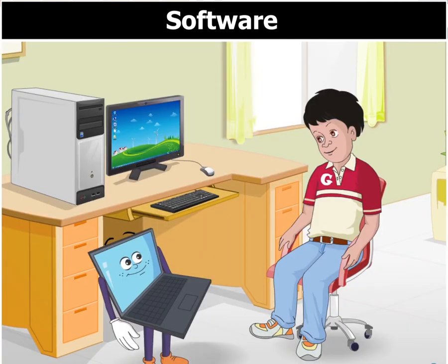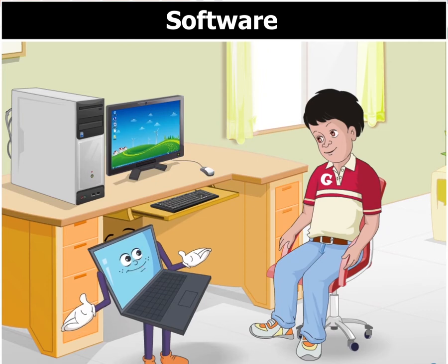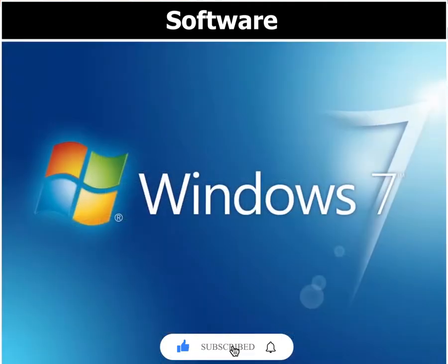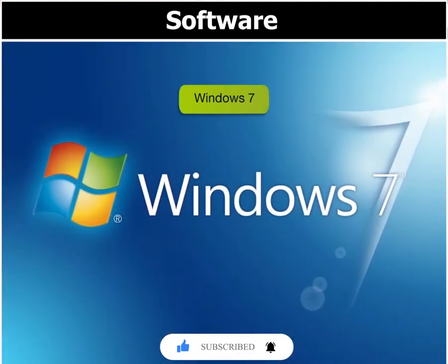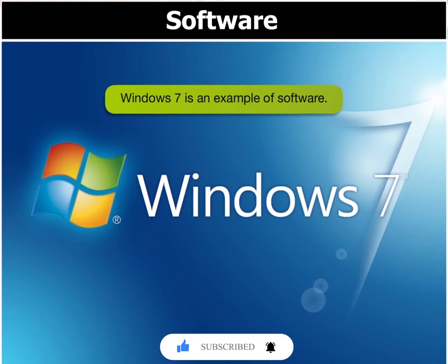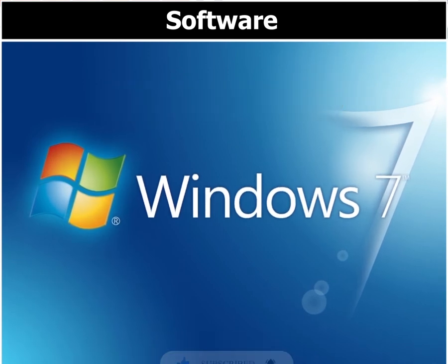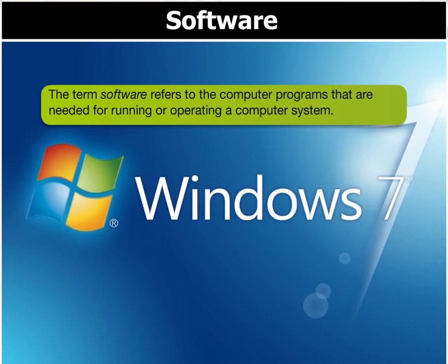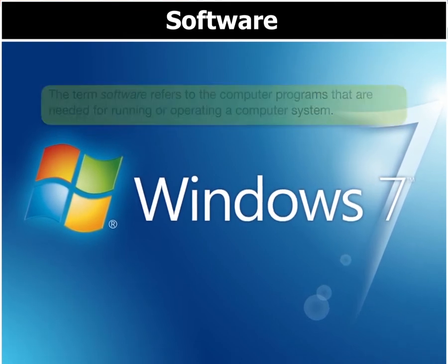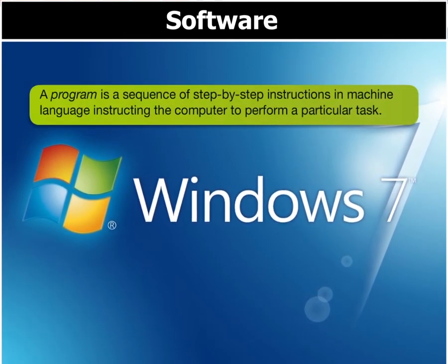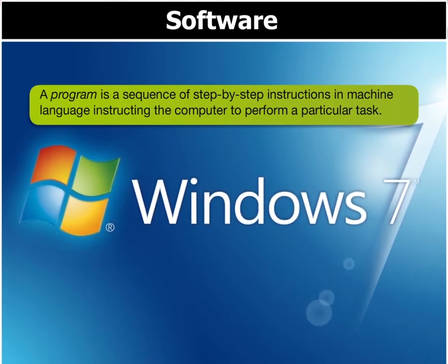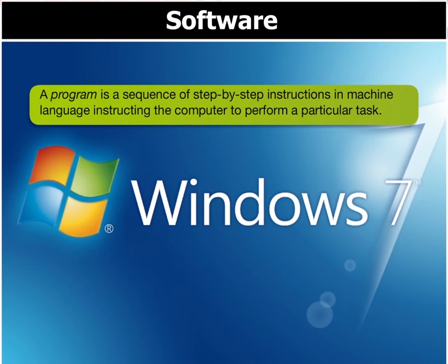What exactly is software? Before I answer that, tell me which Windows version do you have on your system? Windows 7. Windows 7 is an example of software. Software refers to computer programs that are needed for running or operating a computer system. A program is a sequence of step-by-step instructions in machine language instructing the computer to perform a particular task.